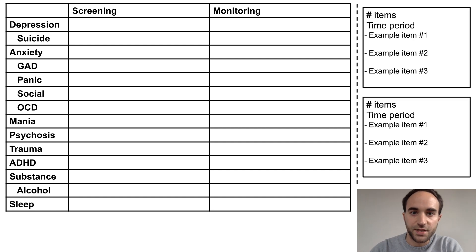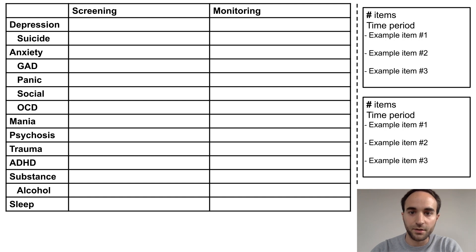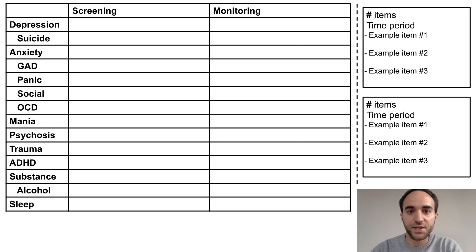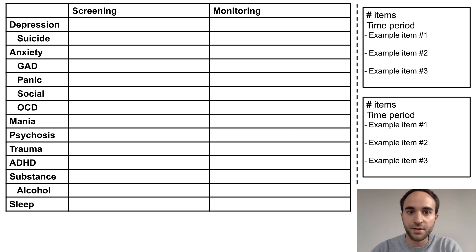On the right side of the screen, I'll show brief excerpts from each tool so you can get a better idea of how many items are included, the time period it is meant to measure, and example questions or items from the tool. All the tools I'll be listing, with one exception, will be patient self-report tools—questionnaires that the patient can fill out on their own—in contrast to clinician-rated tools, which the clinician fills out based on their observations of the patient.